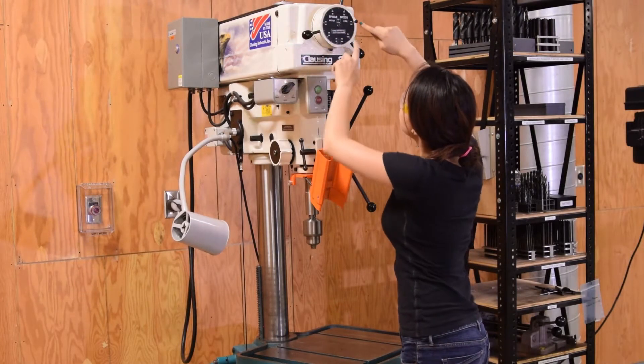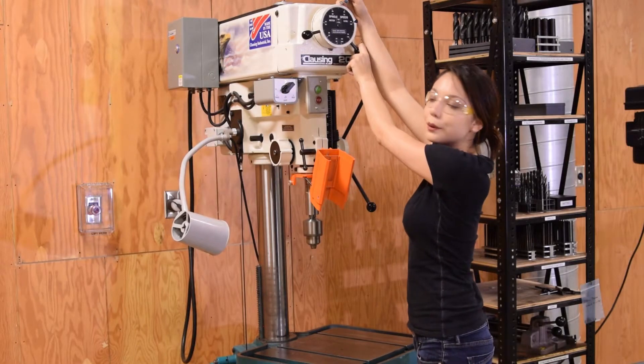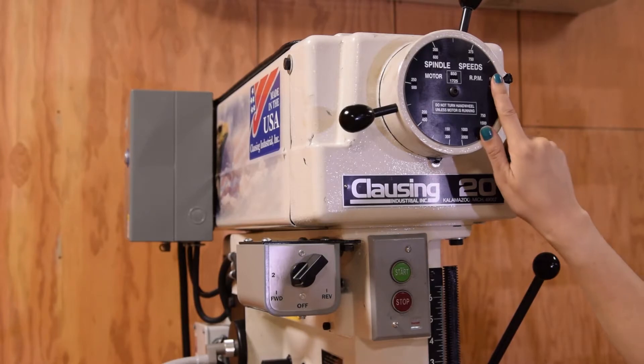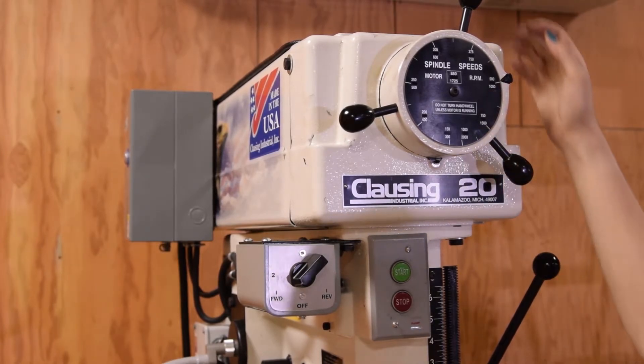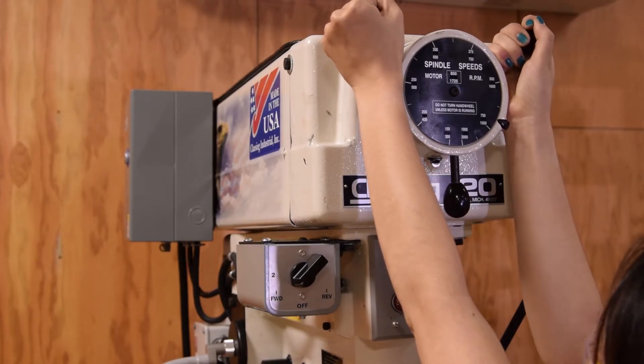So on this particular press, this dial shows what speed we're at. So right now we're running at 500 RPM. If I want to crank that up to 750, I just go over here and you can hear that increase.